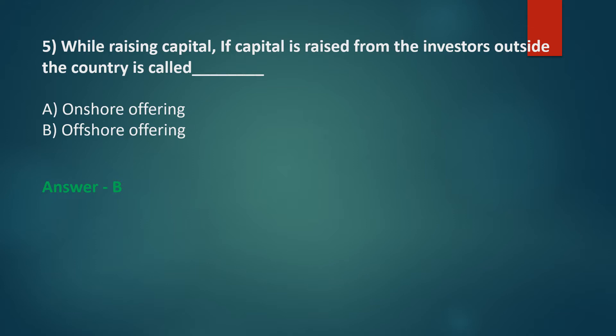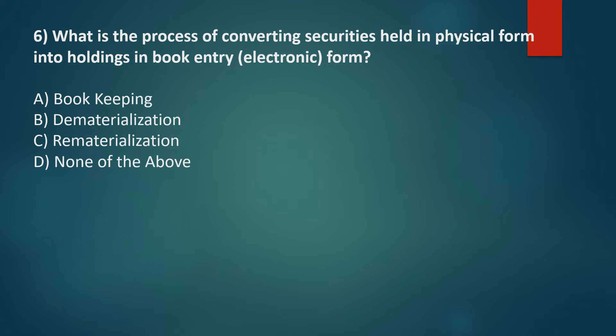Next question: What is the process of converting securities held in physical form into holdings in book entry electronic form? Option A: Bookkeeping, Option B: Dematerialization, Option C: Rematerialization, Option D: None of the above. The correct answer is Option B: Dematerialization.